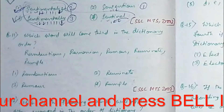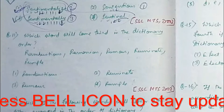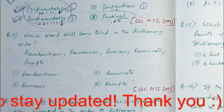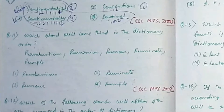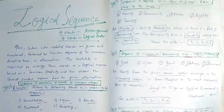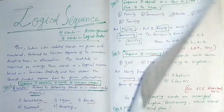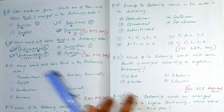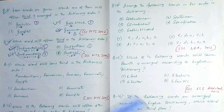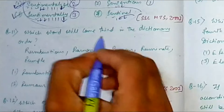Question 11: Which word will come third in dictionary order? The words are rhombustius, romanian, ruma, ruminate, and rumple. Options are: option 1 is rhombustius, option 2 is ruminate, option 3 is ruma, and option 4 is rumple. This question came in SSC MTS 2002. Please pause this video first and try to do it yourself, then check the solution.